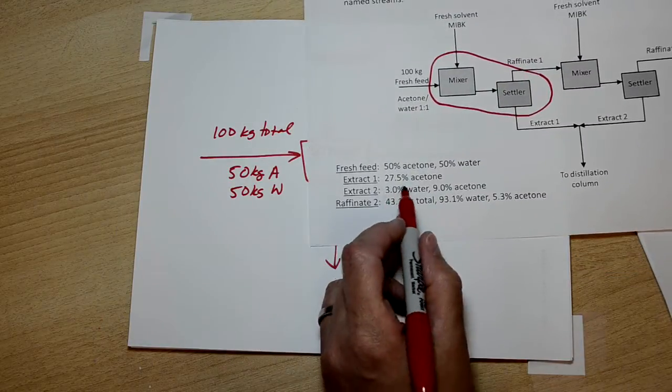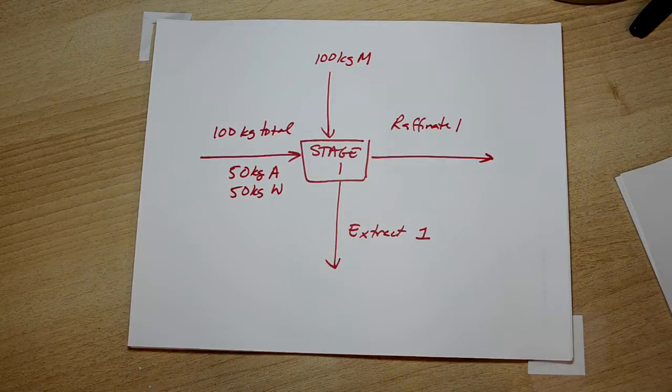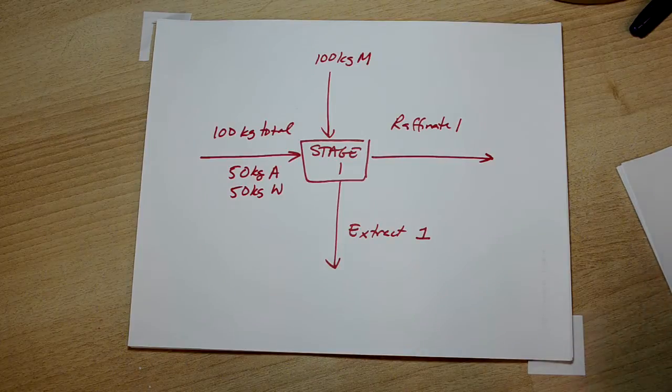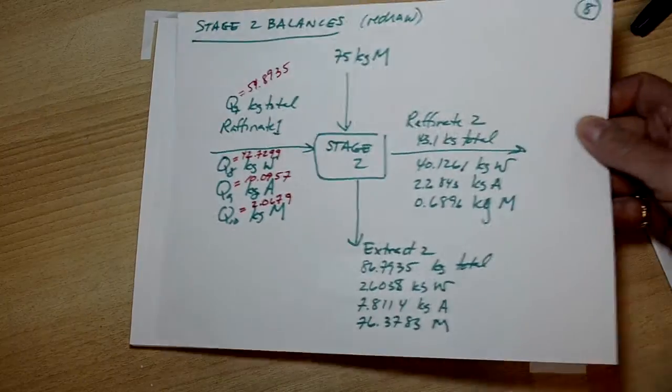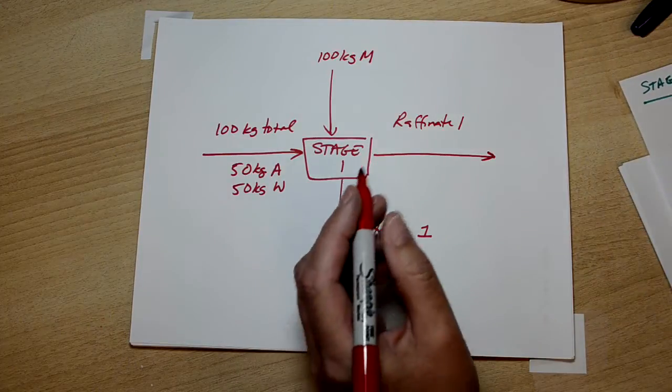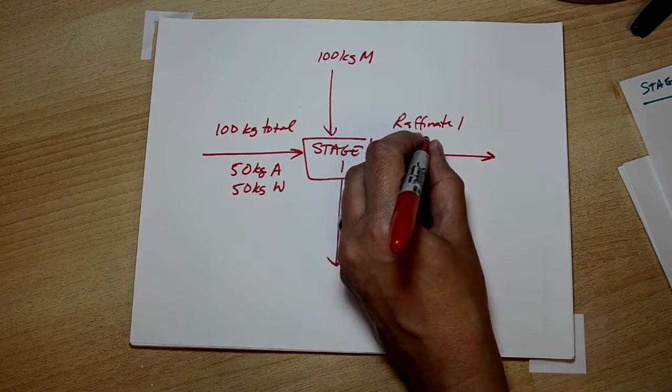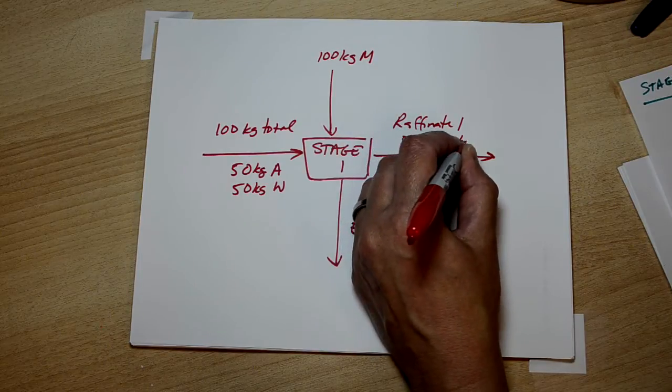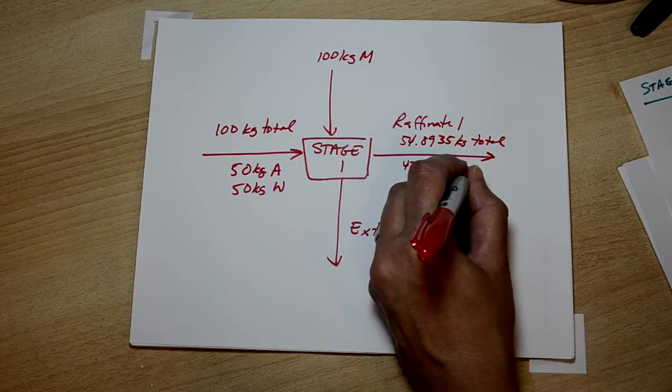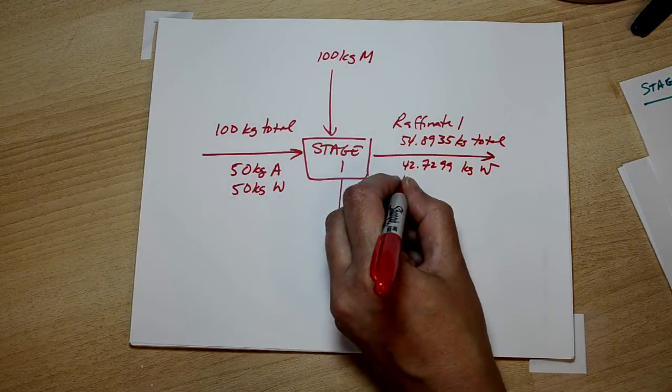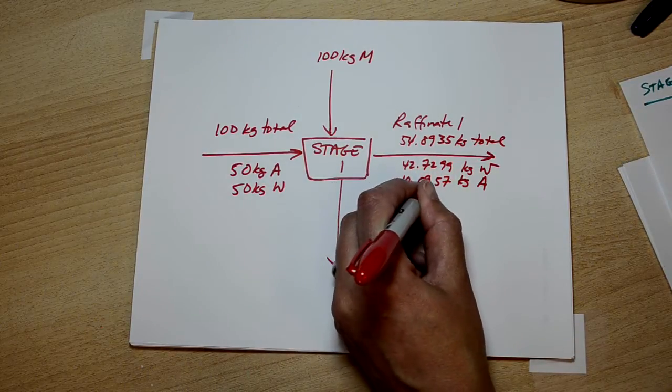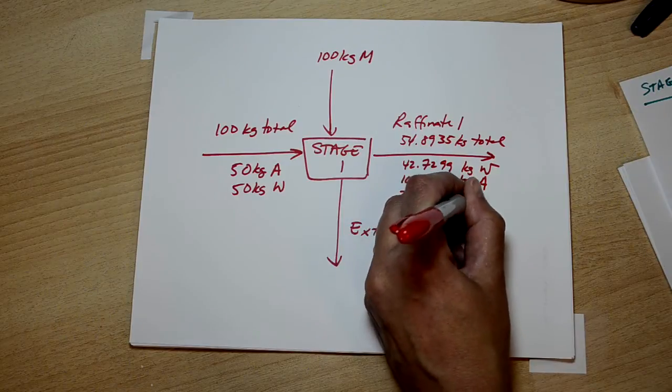The extract one stream we had a little bit about before. We go back through our solution to find these two streams. Here's raffinate one stream. At the result of part two of the video, we had solved for the raffinate one stream, so we can copy those down. We have 54.8935 kilograms total, 42.7299 kilograms of water, 10.0957 kilograms of acetone, and 2.0679 kilograms of MIBK.